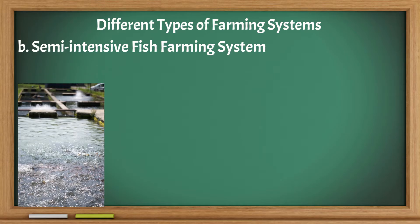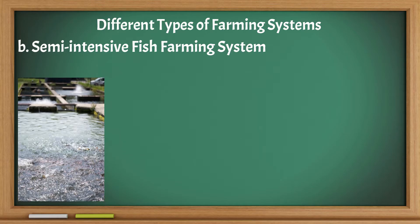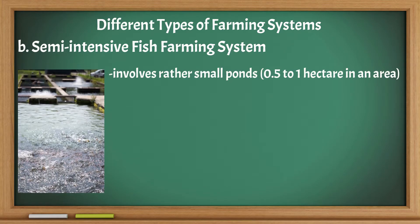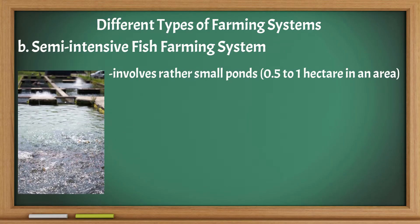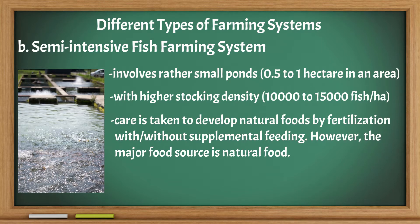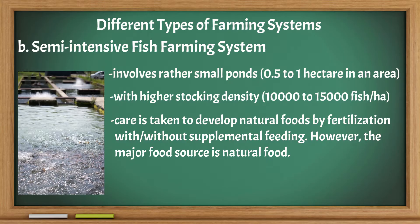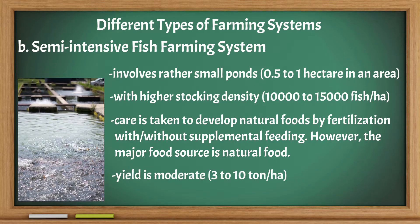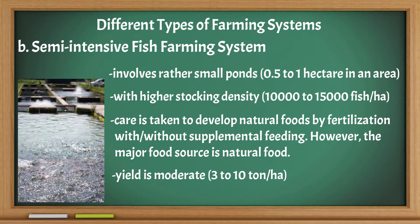Semi-intensive Fish Farming System: It involves rather small ponds with higher stocking density, and care is taken to develop natural foods by fertilization, with or without supplemental feeding. However, the major food source is natural food. The yield is moderate.